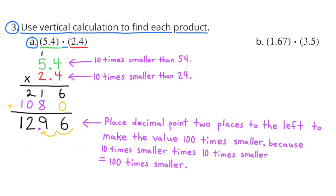Number 3: Use vertical calculation to find each product. Part A: 5 and 4 tenths times 2 and 4 tenths equals 12 and 96 hundredths. This product is 100 times smaller than 54 times 24, because 5 and 4 tenths is 10 times smaller than 54, and 2 and 4 tenths is 10 times smaller than 24, and 10 times 10 equals 100. So I move the decimal point two places to the left — instead of 1,296 it becomes 12 and 96 hundredths.